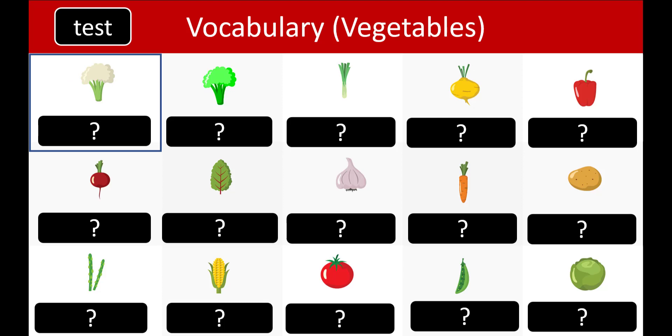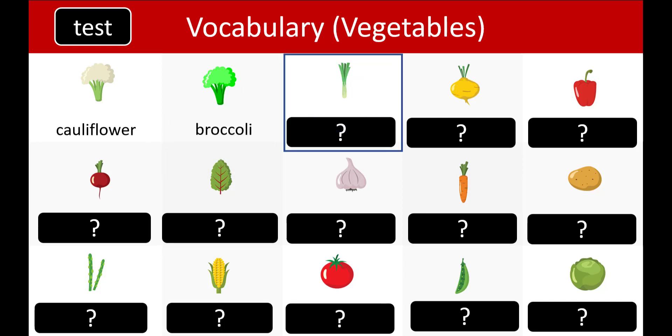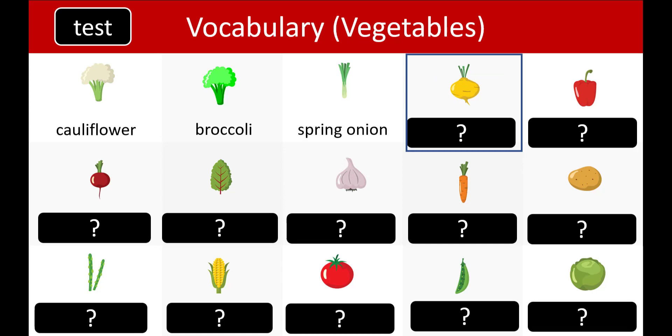What is this one? Cauliflower. What is this one? Broccoli. What is this one? Spring onion. What is this one? Turnip. This one?